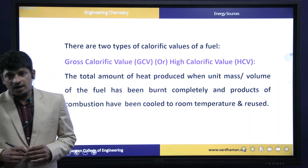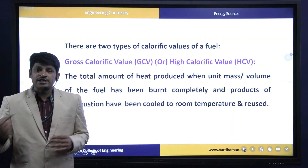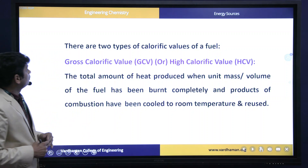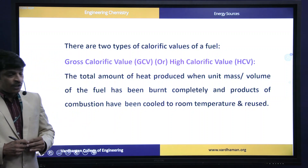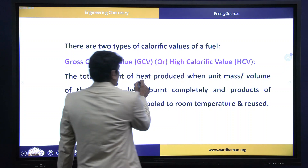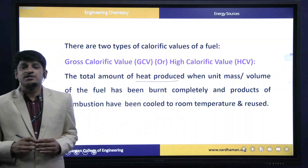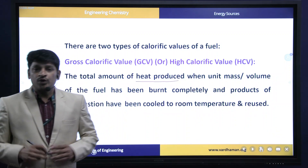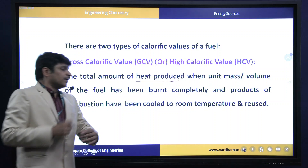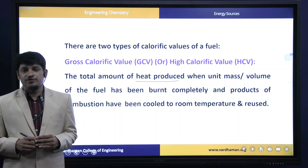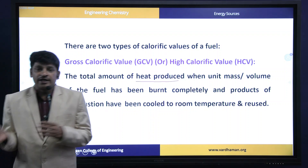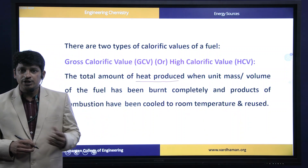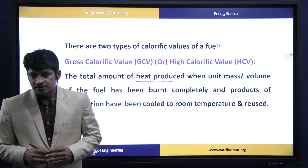There are two types of calorific values: Gross Calorific Value (GCV), also called High Calorific Value (HCV), and Net Calorific Value (NCV), also called Low Calorific Value (LCV). Gross Calorific Value is the amount of heat produced when a unit mass of fuel is completely burnt and the products of combustion are also utilized to produce additional heat. This combination of heat from the fuel and its combustion products is the GCV, which includes the latent heat of water vapor.